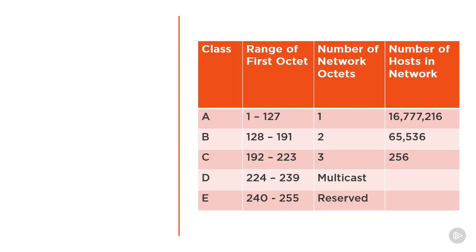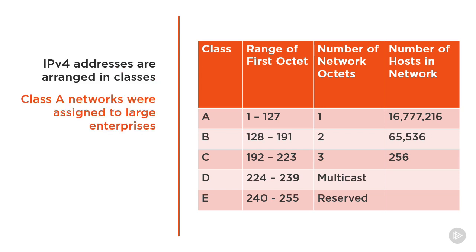The chart to the right shows the classes that IPv4 addresses are arranged in. The original intention was to carve out chunks of addresses and assign them to organizations that could effectively use them. Class A networks, for instance, were assigned to large enterprises like AT&T, since they had a significant potential to utilize them effectively over time.